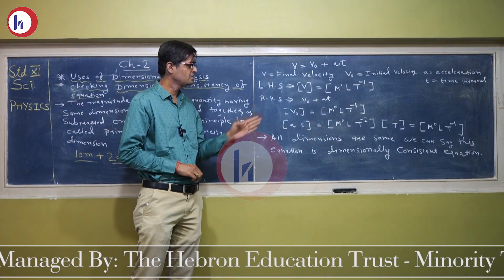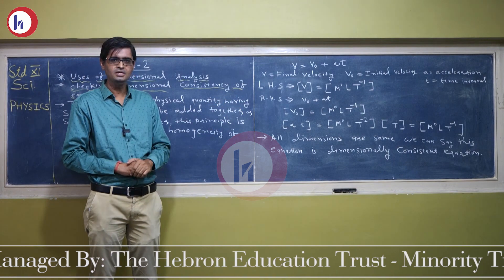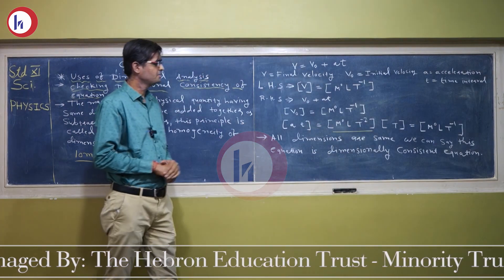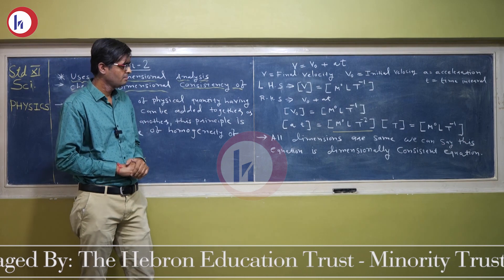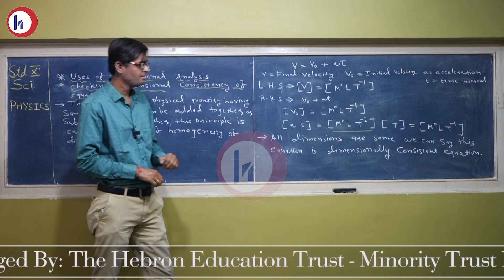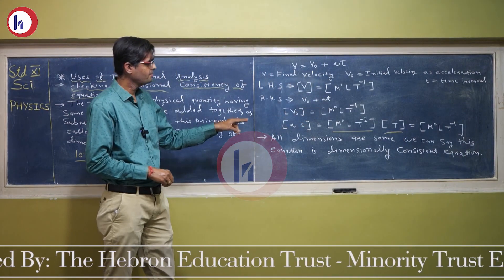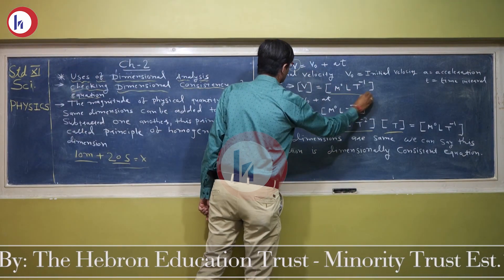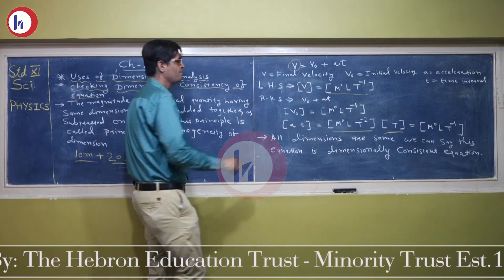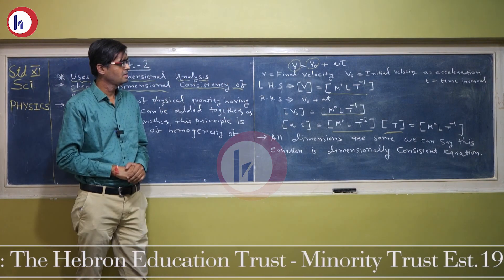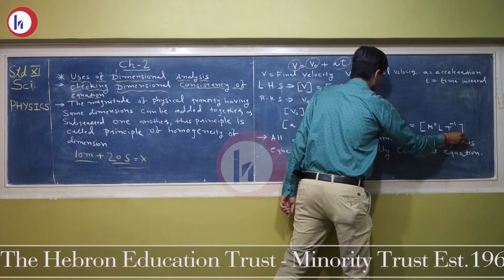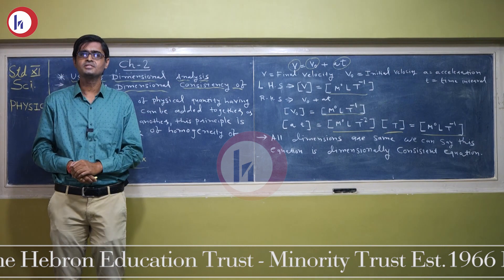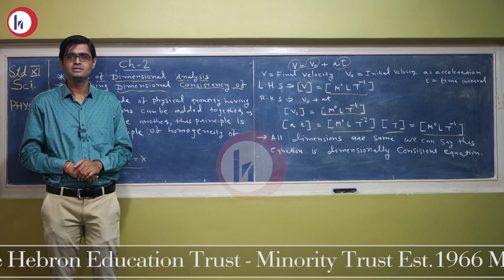On the left hand side, V has dimensional formula M⁰ L¹ T⁻¹. On the right hand side, V₀ also has dimension M⁰ L¹ T⁻¹. For A×T: acceleration has dimensional formula M⁰ L¹ T⁻², and T has dimension T¹, so A×T gives M⁰ L¹ T⁻¹. All terms — V, V₀, and AT — have the same dimensions M⁰ L¹ T⁻¹. So we can say this equation is dimensionally consistent, which is one important use of dimensional analysis.